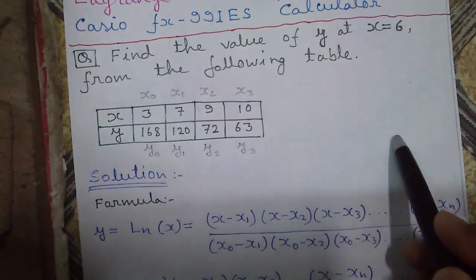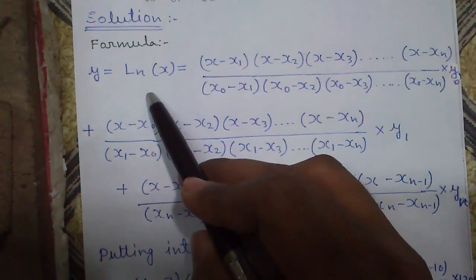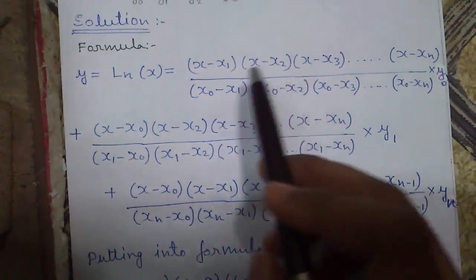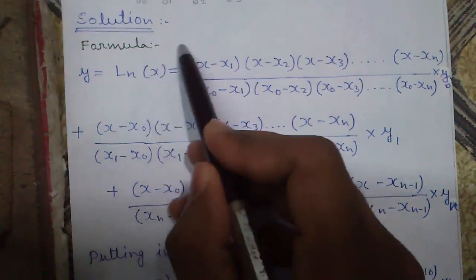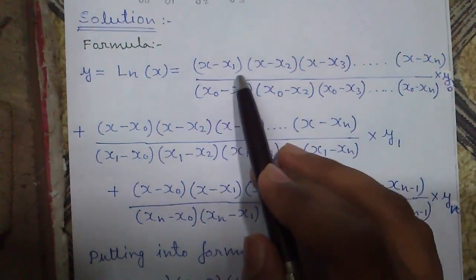This is the Lagrange formula. Don't get in panic, I will explain it to you. So y equals Ln, the Lagrange term of x, where x is the variable.